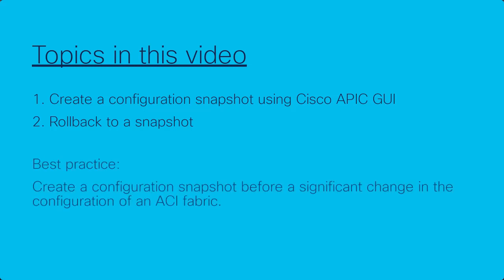As a best practice, Cisco recommends to capture a configuration snapshot before you make any significant change to your ACI fabric. This allows you to easily roll back from the change in case anything goes wrong.